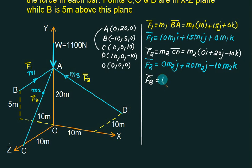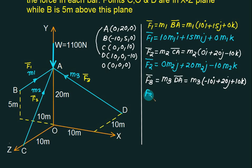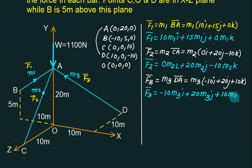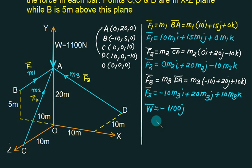For F3 bar, directed from D to A: DA means A minus D. D is (10, 0, -10), so A minus D gives (-10, 20, 10). Therefore F3 bar equals minus 10·m3·i plus 20·m3·j plus 10·m3·k. The last force is W bar, acting downward, so W bar equals minus 1100·j. Since the system is a concurrent force system, the condition is that the summation of F bar must equal zero.